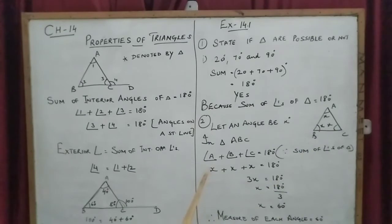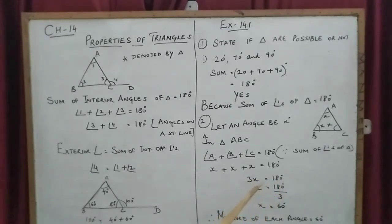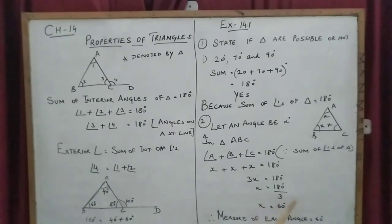When a variable has no numeral, the coefficient is 1. So one x plus one x plus one x equals three x. Three x equals 180. When we take 3 to the other side of the equals sign, multiply becomes divide. Three into 60 is 180, so x equals 60 degrees.